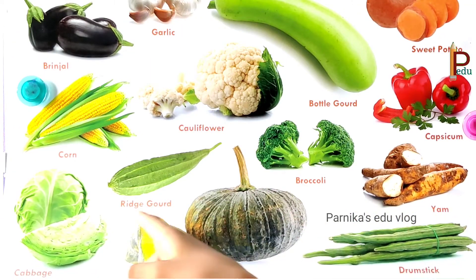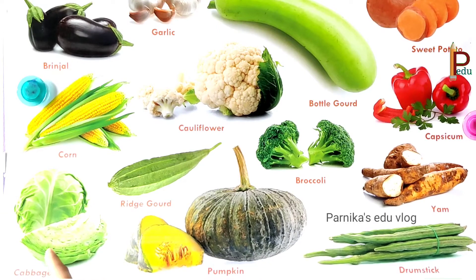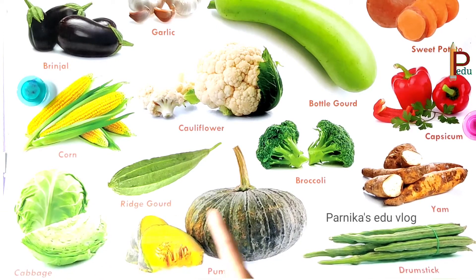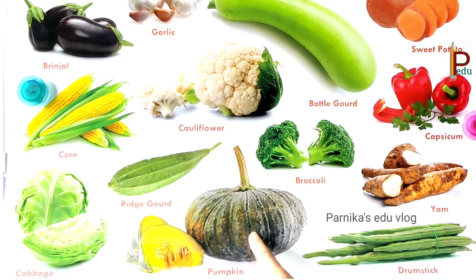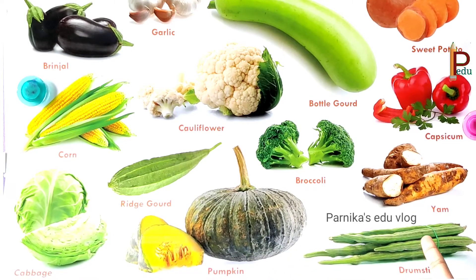This is ridge gourd. This is cabbage. This is pumpkin. These are drumsticks.